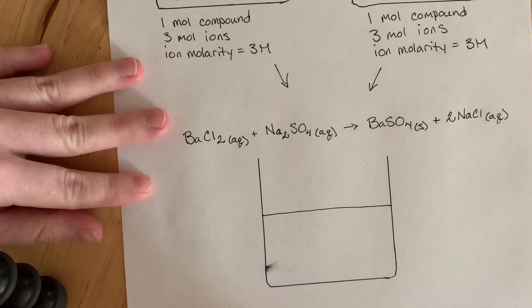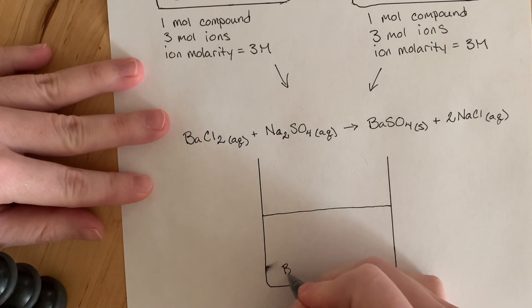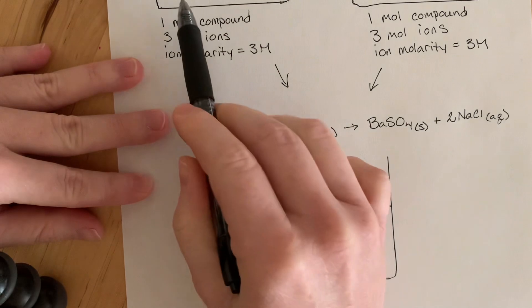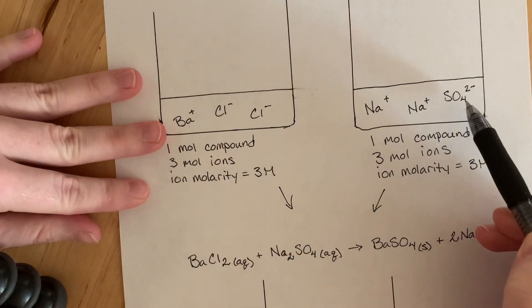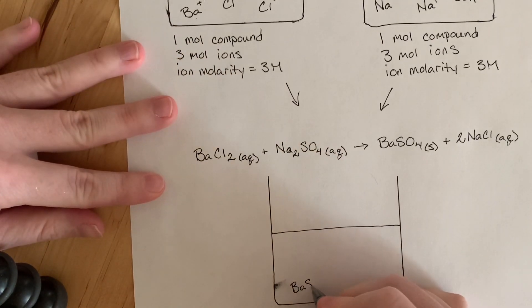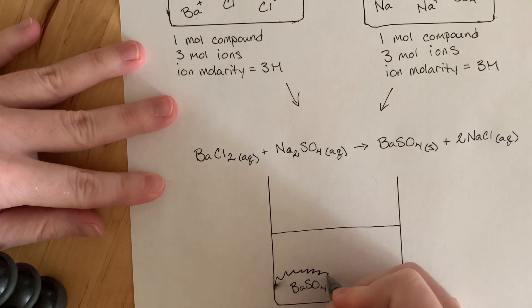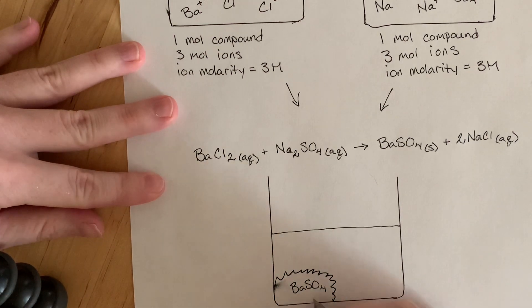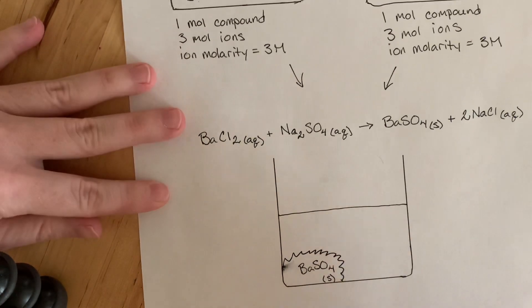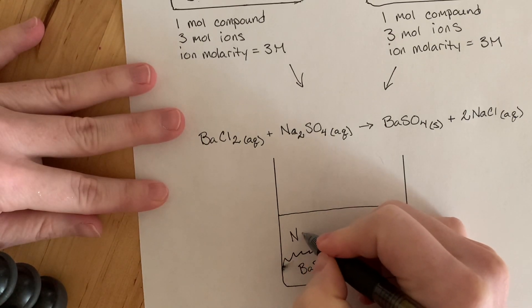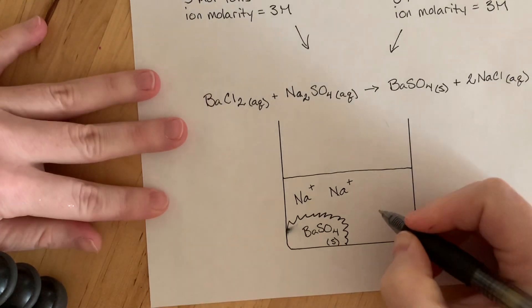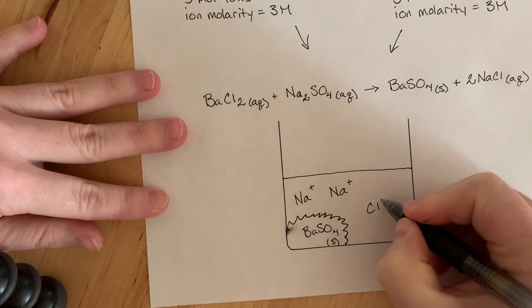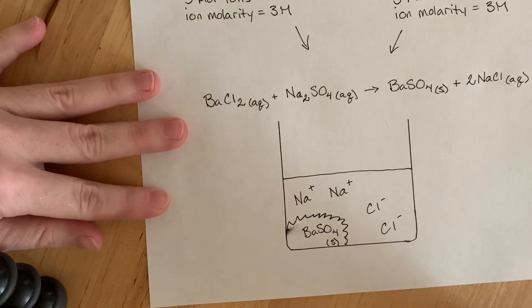So what's that going to look like in here? Well, we've got our one mole of barium and our one mole of sulfate. That's going to be a solid sitting at the bottom there. Then we have our two moles of sodium and our two moles of chloride.